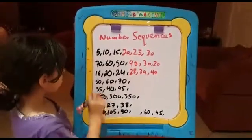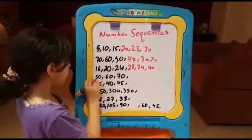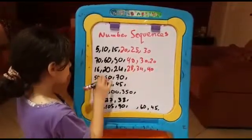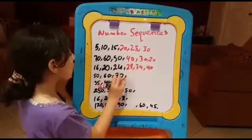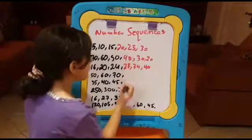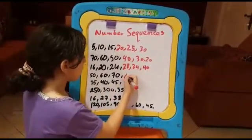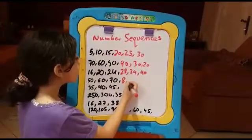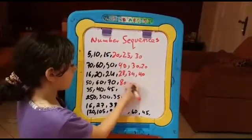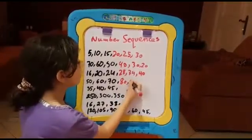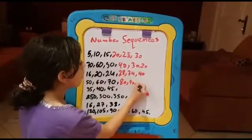Now here we have 50, 60, 70. The rule is adding 10. Now here we have the next three numbers: 80, 90, and 100.